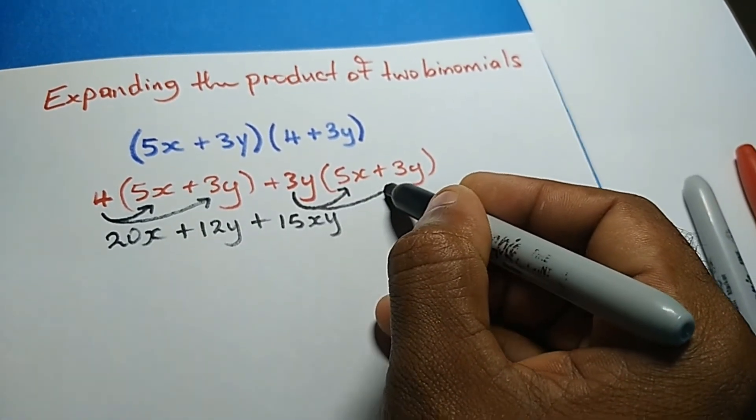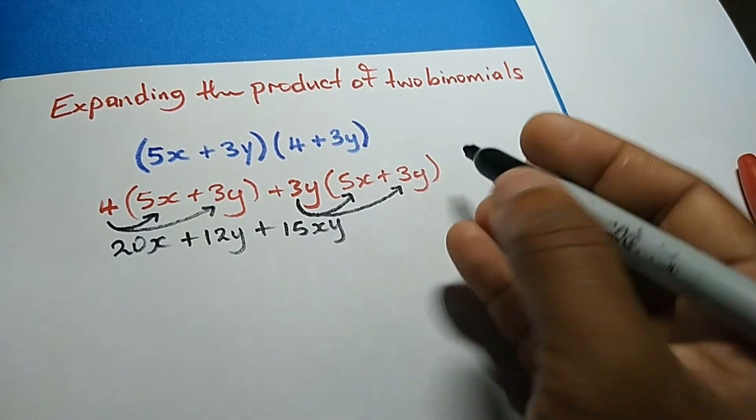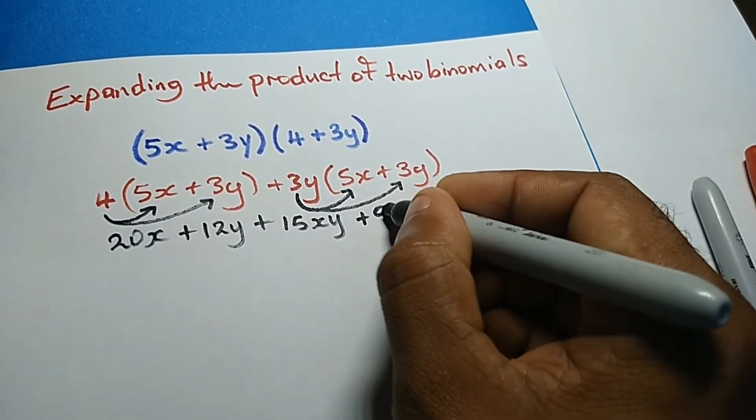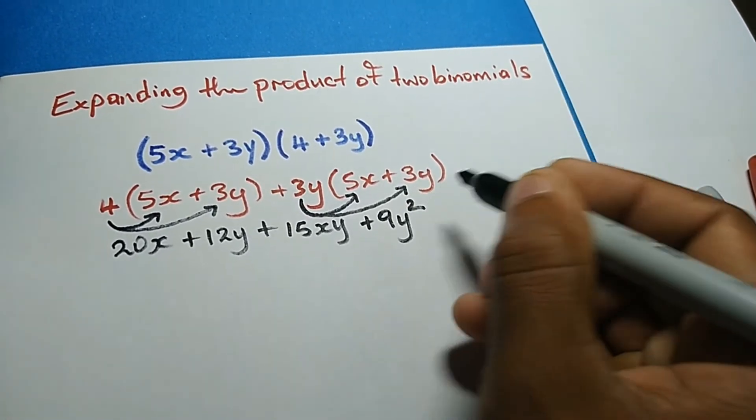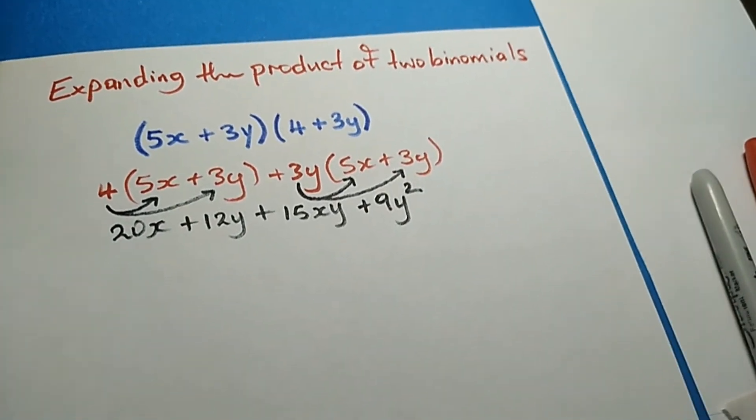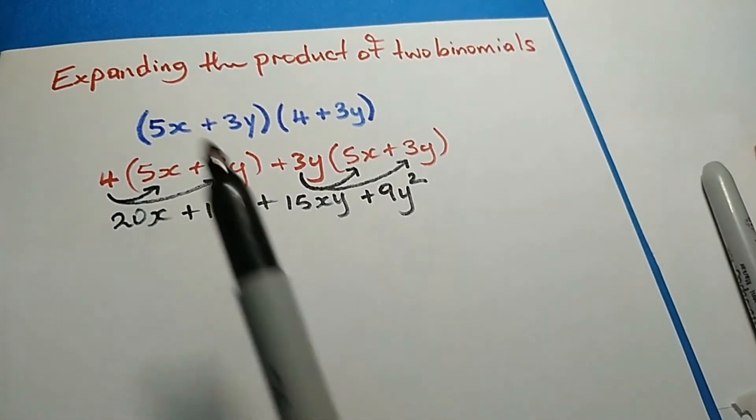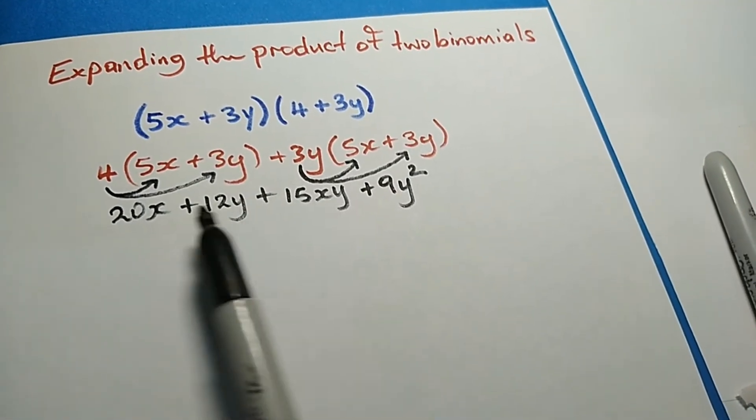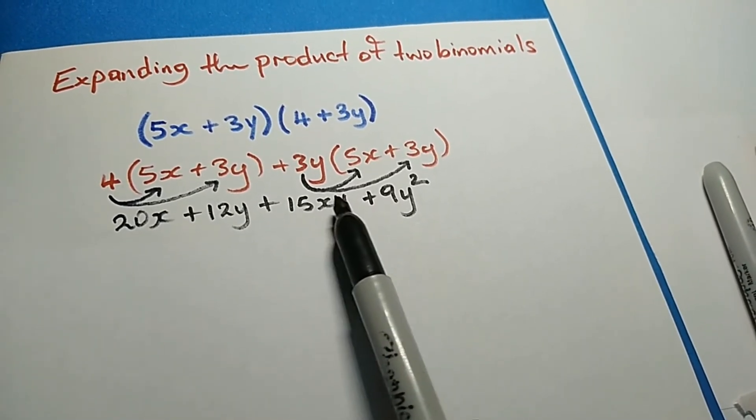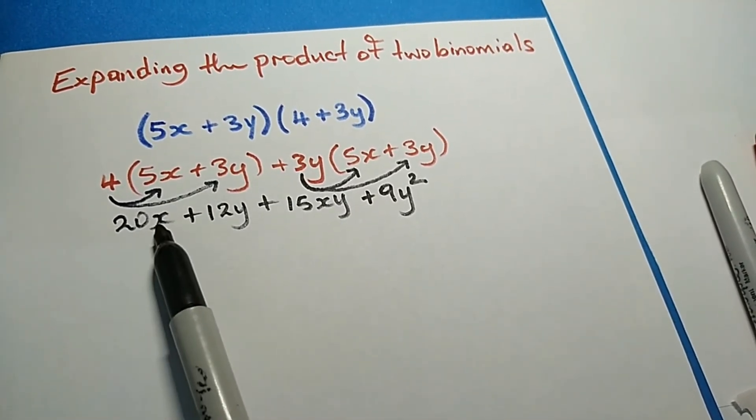Multiplying 3y by 3y gives me positive 9y². Now if you look at this question carefully, we don't have any like terms. Even though 15xy has x and y, all the other terms would need both x and y to be like terms. We don't have any like terms for 20x.